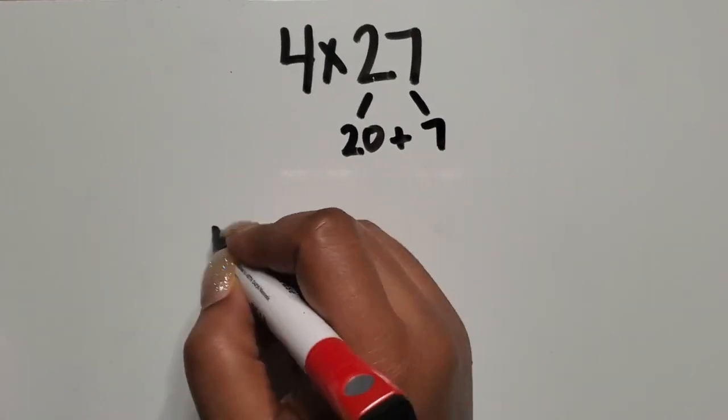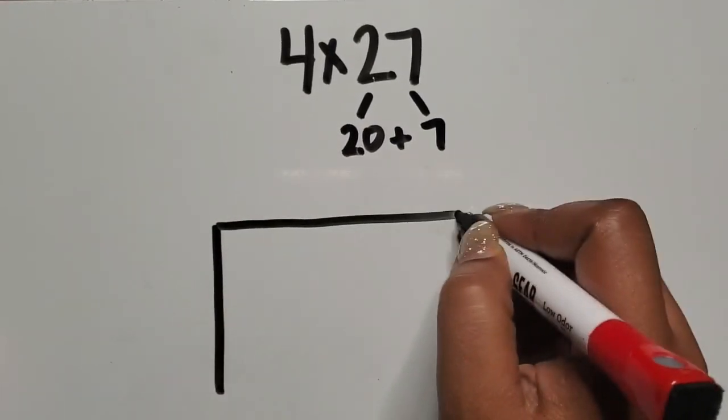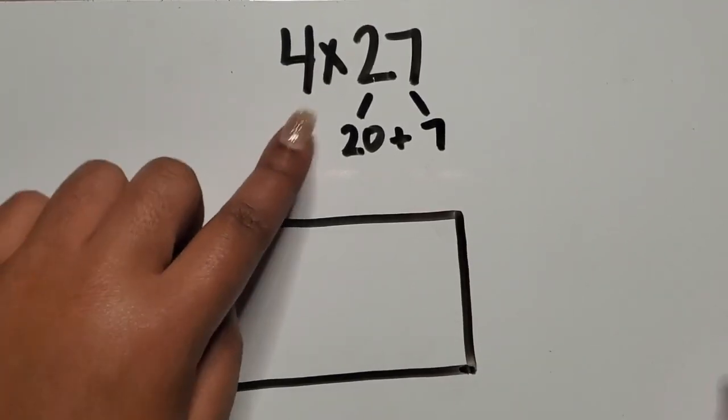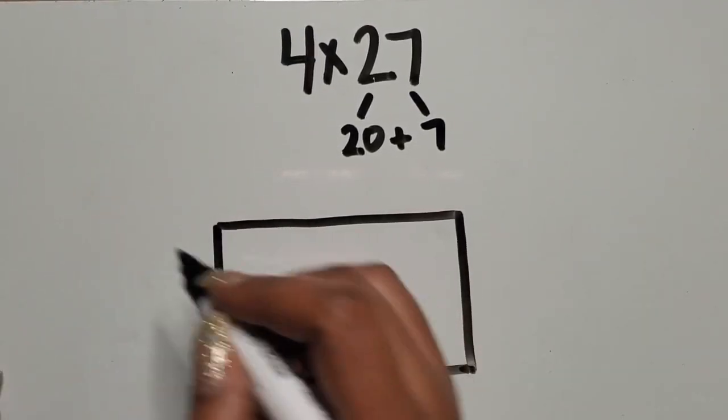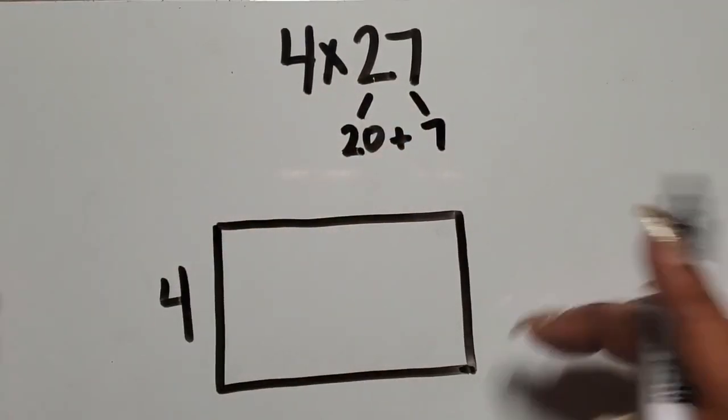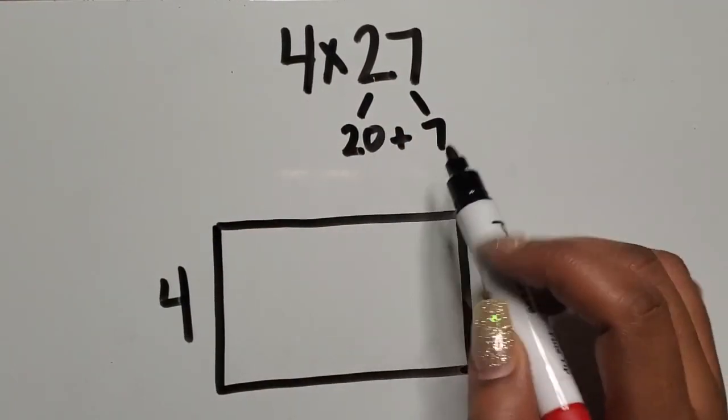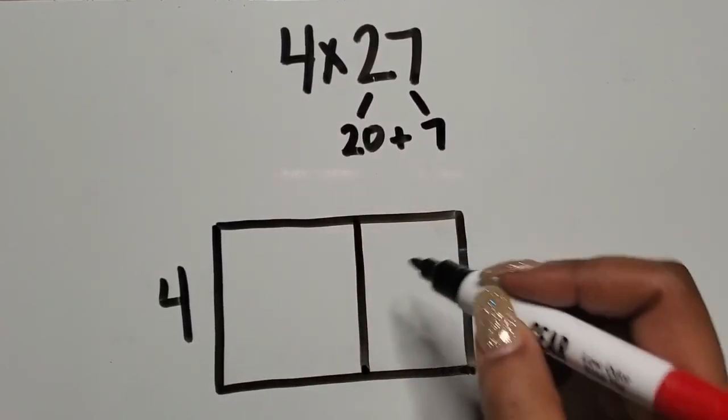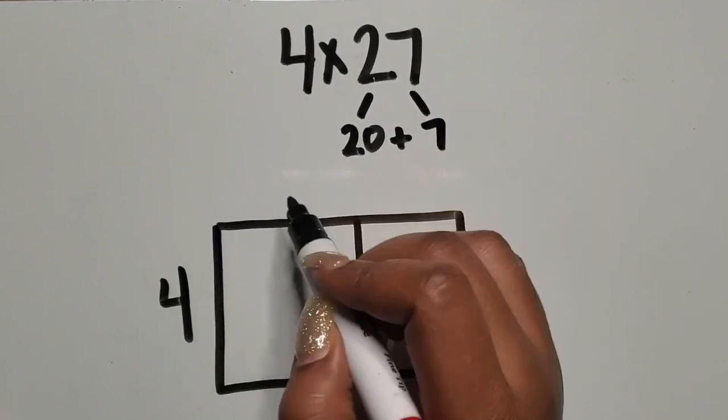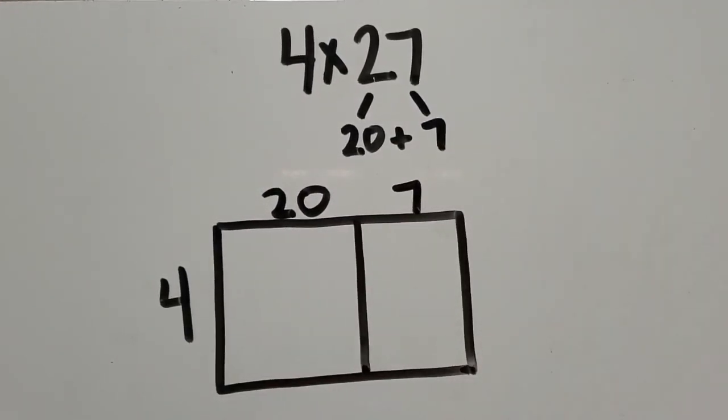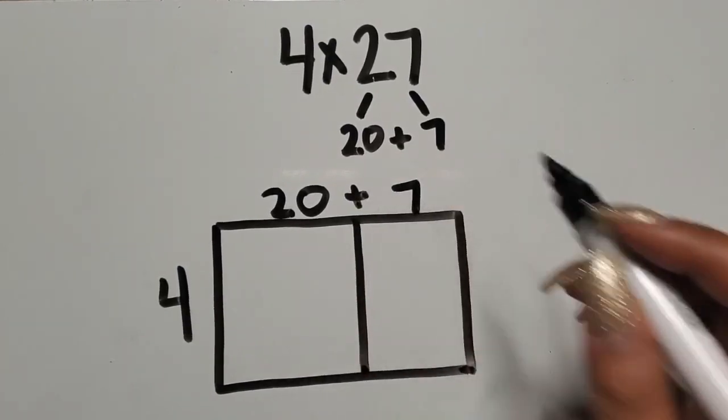So now I know that, so I'm going to draw my rectangle. I know this first factor represents my rows, so I'm going to write the four over here. The second factor is 27, but remember we broke it up into 20 and seven. So I'm going to partition the rectangle here and I'm going to place the 20 on this side and the seven on this side.